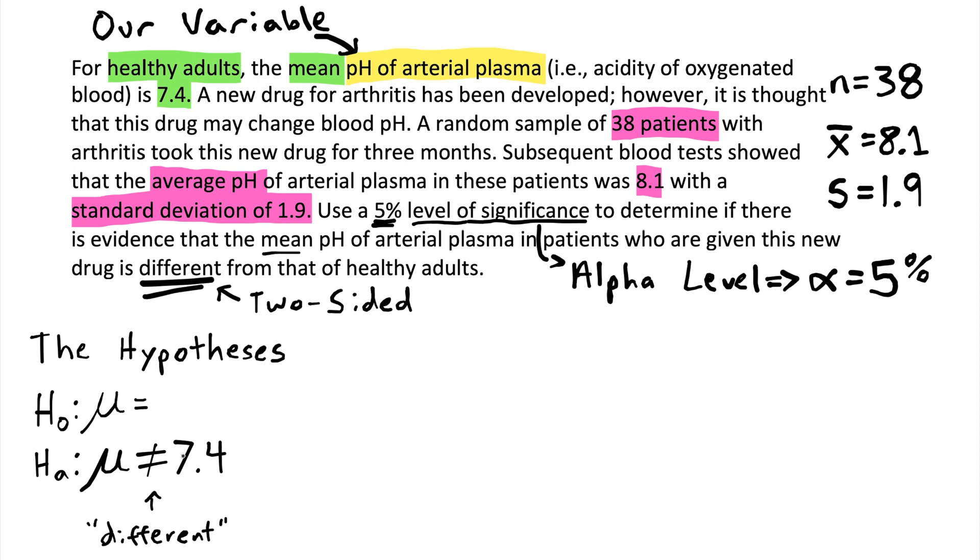The claim that you're investigating is always in the alternative hypothesis. And the null hypothesis is always a statement that I kind of like to think about it as a statement that nothing's going on. Null is like nothing. So the null would be saying that patients who took this drug have healthy pH levels, and the alternative would be saying that patients who took this drug had pH levels that were different from healthy.